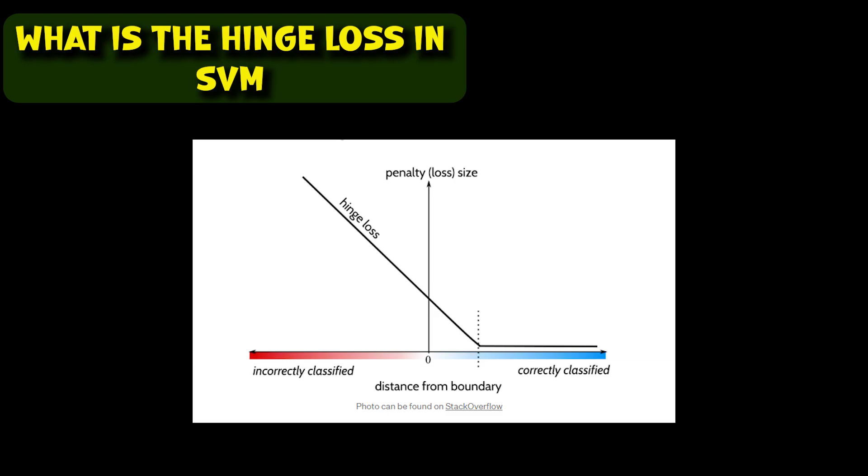If the distance from the boundary is 0, meaning the instance is literally on the boundary, then we incur a loss size of 1. We see that correctly classified points will have a small or no loss at all, while incorrectly classified instances will have a high loss size.